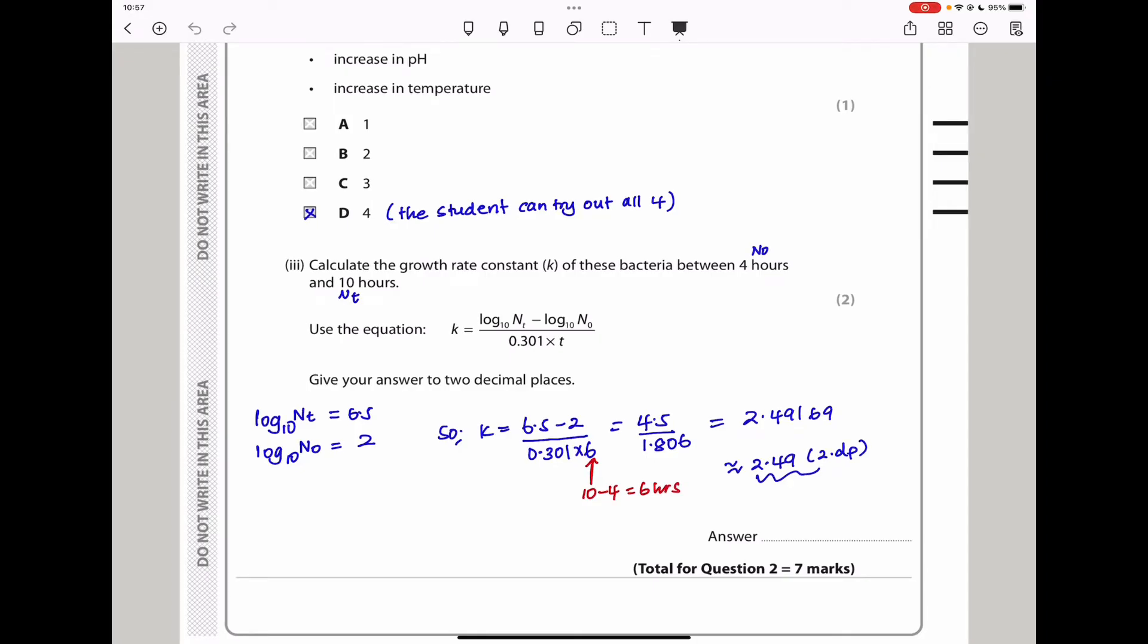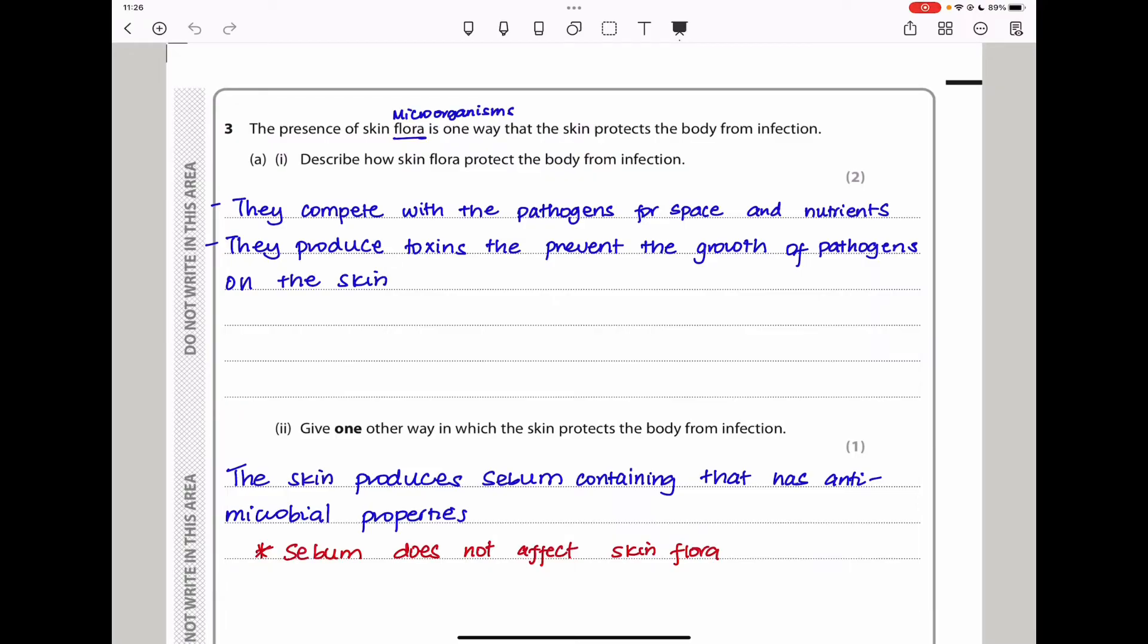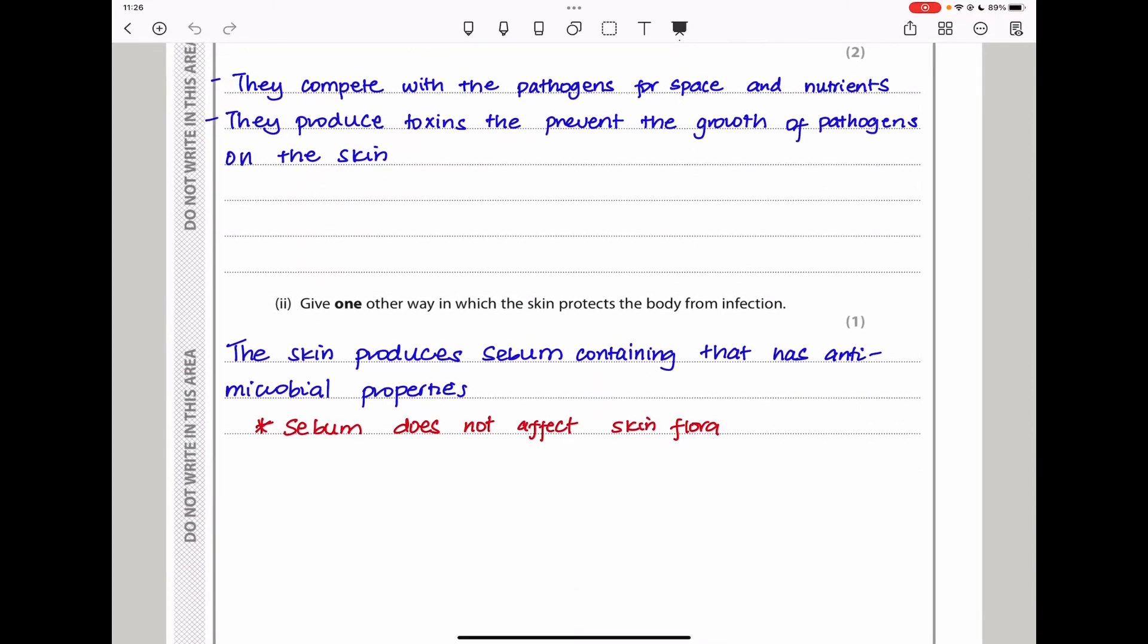Let's move on to question three. Question three says, the presence of skin flora is one way that the skin protects the body from infection. Describe how skin flora protects the body from infection. Remember, skin flora are microorganisms that are formed on the surface of our skin. They are not pathogenic to us, so they do not cause disease. So how do they protect the body from infection? By competing with pathogens for space and nutrients so that pathogens do not grow. Also, they produce toxins that prevent the growth of pathogens on the skin.